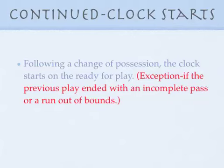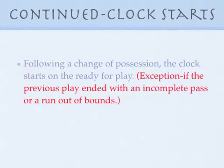Here's another example where the game clock starts on the ready for play. Team A's ball, fourth and ten at the 50-yard line. The quarterback scrambles, unable to find a receiver, and runs but is tackled inbounds at the B 45-yard line. The clock stops because team A's possession series has ended on a fourth down that did not make the line to gain. The ball is awarded to team B, first and ten from the B 45-yard line, and the clock starts on the ready for play.